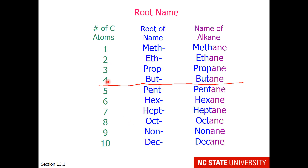The roots are slightly different for organic compounds when we're dealing with 1 to 4 carbons. 1 carbon is 'meth' — you've already seen methane. 2 carbons is 'eth', not 'di', giving ethane. 3 carbons is 'prop', not 'tri', and 4 carbons is 'but', not 'tetra'.